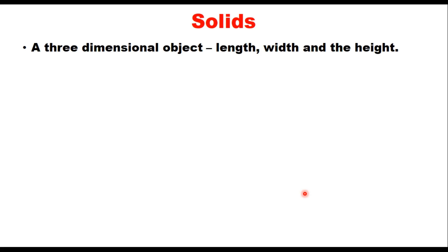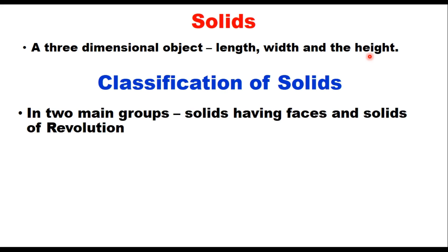Hello friends, welcome again to my channel. Today in this session we will discuss different types of solids, and in subsequent lectures I will tell you how to draw projections of these solids. A solid is a three-dimensional object and therefore it has length, width, and height. It is different from plane figures — a plane figure has only length and width, making it two-dimensional. There are two types of solids: solids having faces, and solids of revolution.